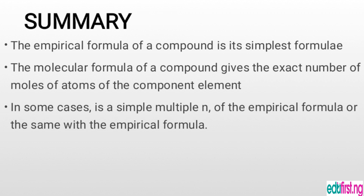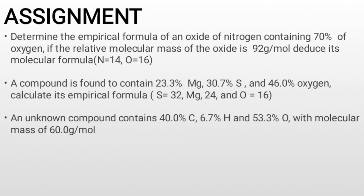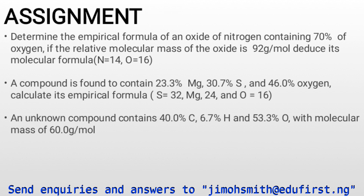In summary: the empirical formula of a compound is its simplest formula. The molecular formula of a compound gives the exact number of moles of atoms of the component element, and in some cases it is a simple multiple n of the empirical formula. I would have loved to give more examples but because of time I'll give an assignment instead. I hope to get your feedback — thank you for today's class.